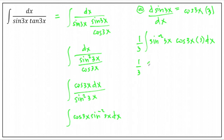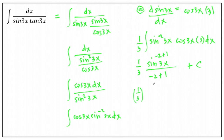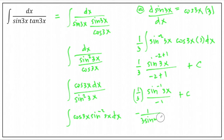Applying the power formula: copy the base sin(3x), the exponent is negative 2 plus 1, divided by negative 2 plus 1, with the 1/3 factor. That simplifies to one-third times sin⁻¹(3x) over negative 1 plus c, which equals negative 1 over 3 sin(3x) plus c. So the final answer is negative 1 over 3 sin(3x) plus c.